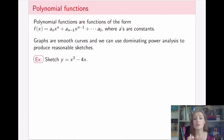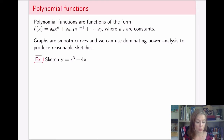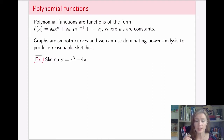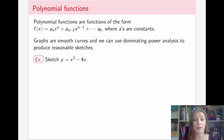Graphs of polynomial functions are very nice smooth curves — there are no asymptotes, no holes, nothing unexpected going on — and therefore they should be fairly straightforward to sketch. Let's take a look at our first sketch example: we're going to sketch x cubed minus 4x, which is a cubic polynomial function.